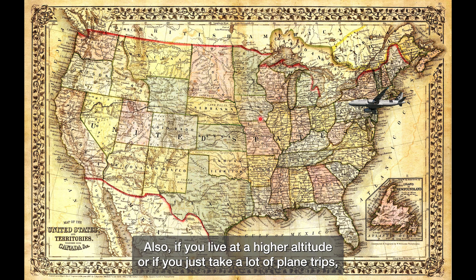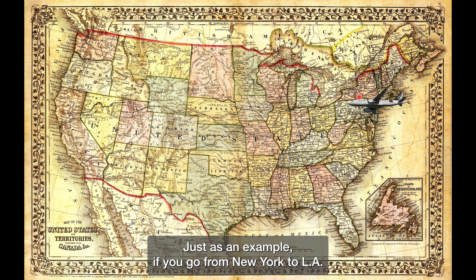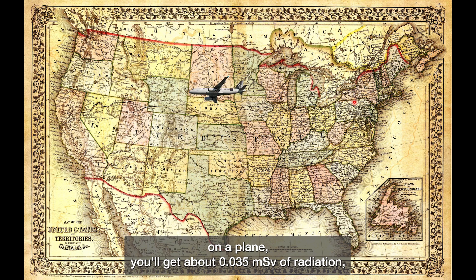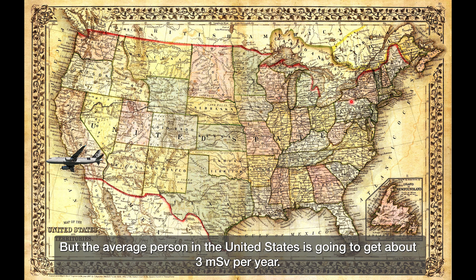Also, if you live at a higher altitude or if you take a lot of plane trips, you're going to get more cosmic radiation, which comes in from space. Just as an example, if you go from New York to LA on a plane, you'll get about 0.035 millisieverts of radiation, which is about a third of a chest X-ray. But the average person in the United States is going to get about 3 millisieverts per year.